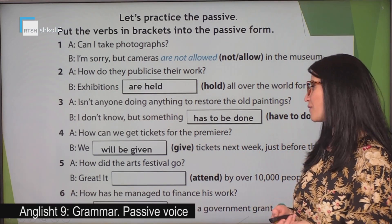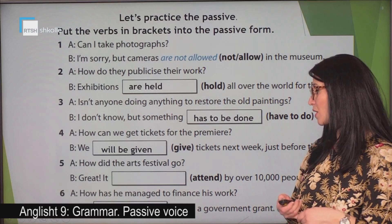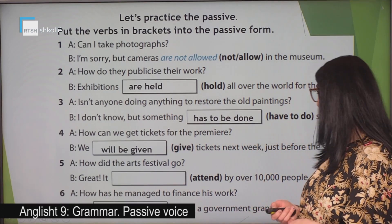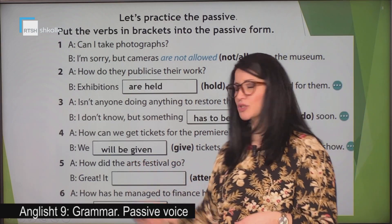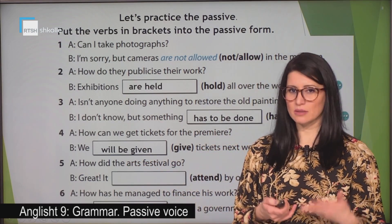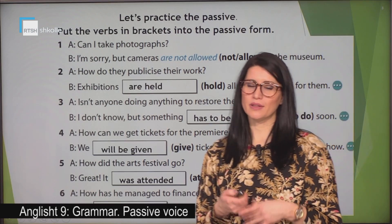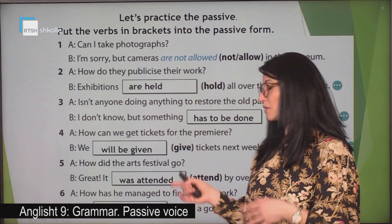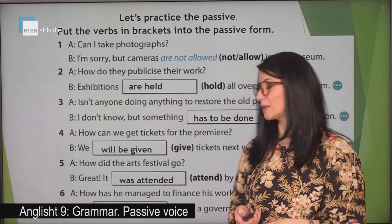Number five: how did the arts festival go? Great — it was attended by over 10,000 people. Have a look at the question here — the question is in the past. So have a look at the passive verb: 'was attended'. We have used the verb 'to be' in the past as well.